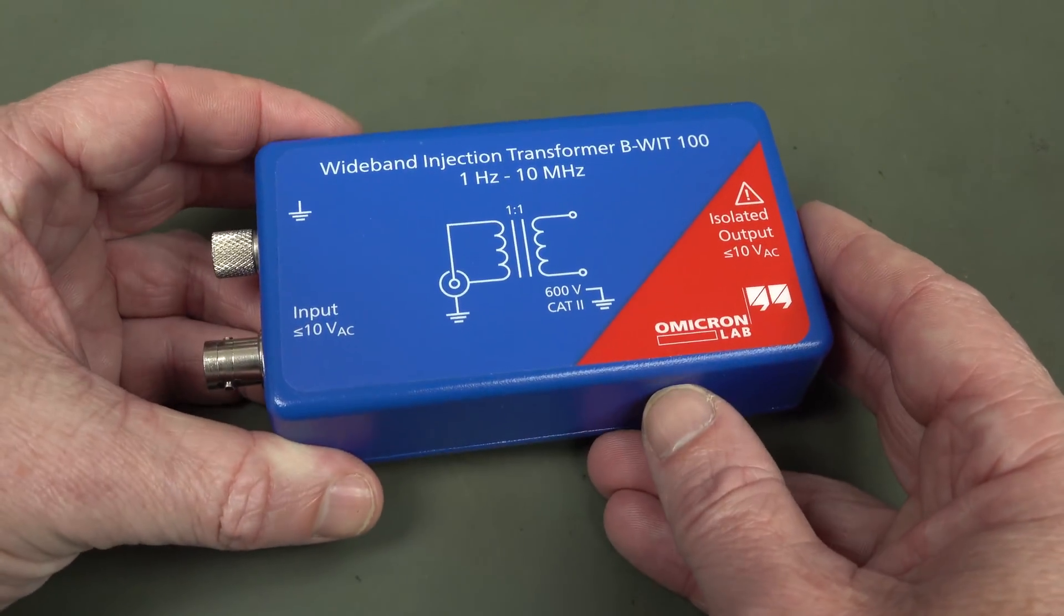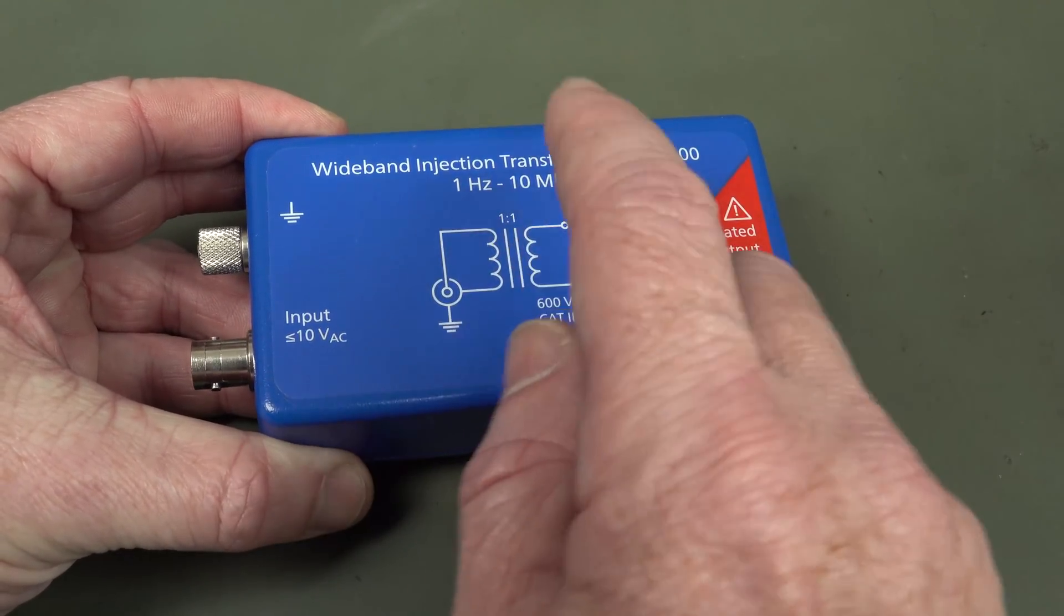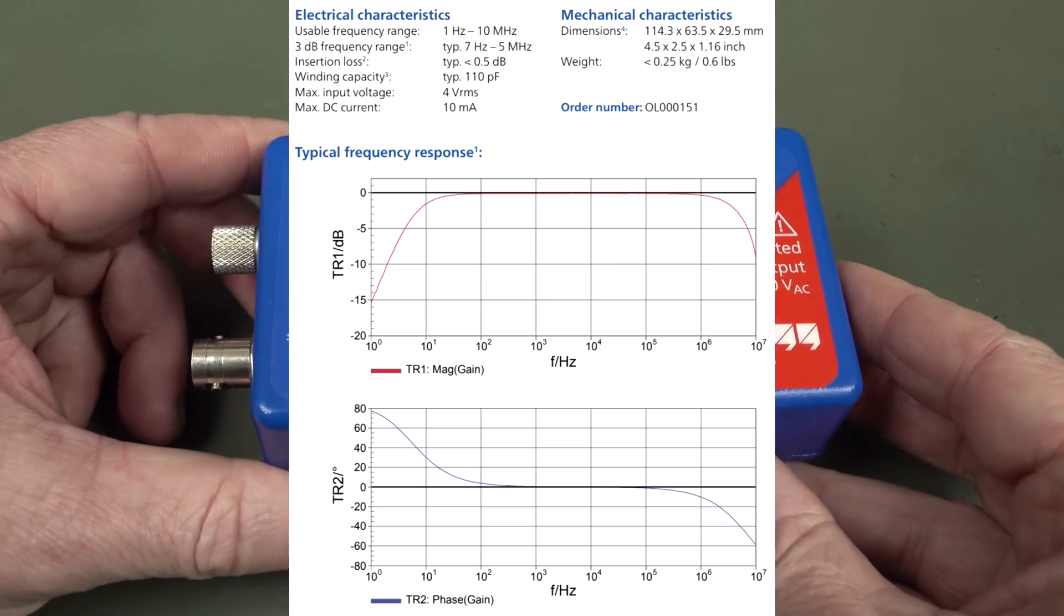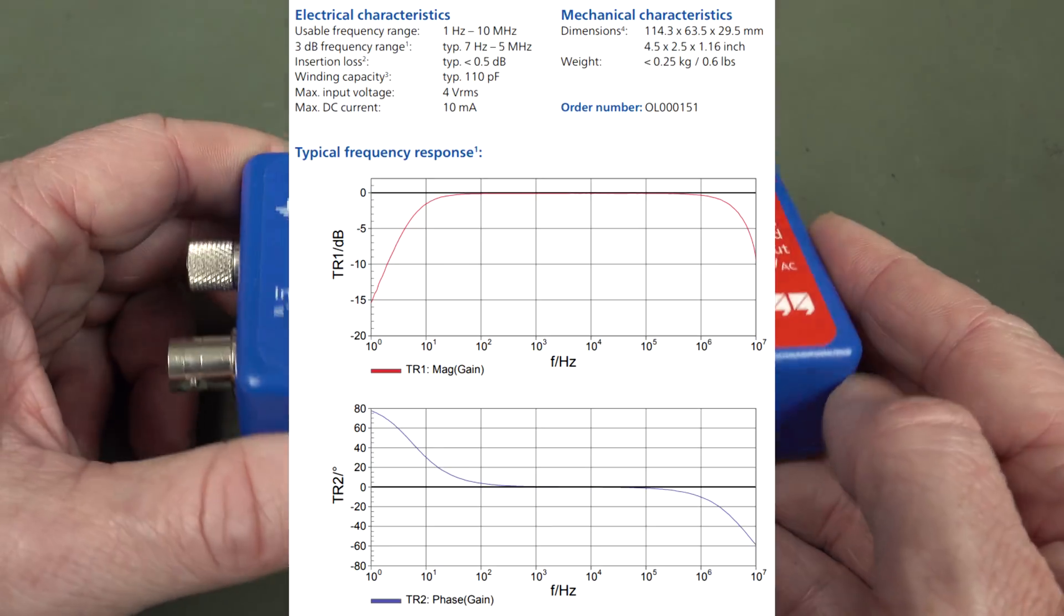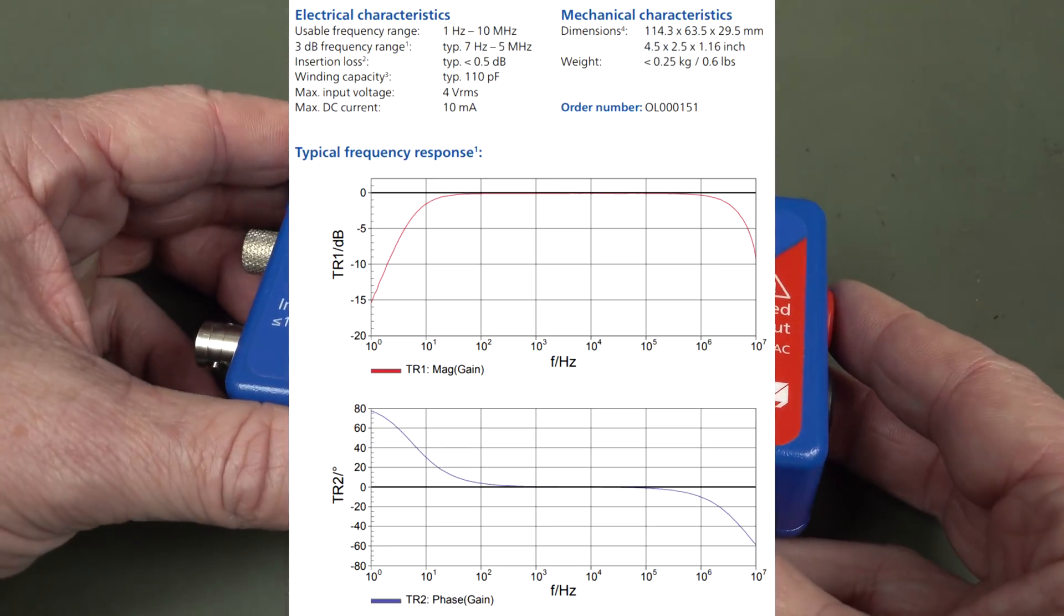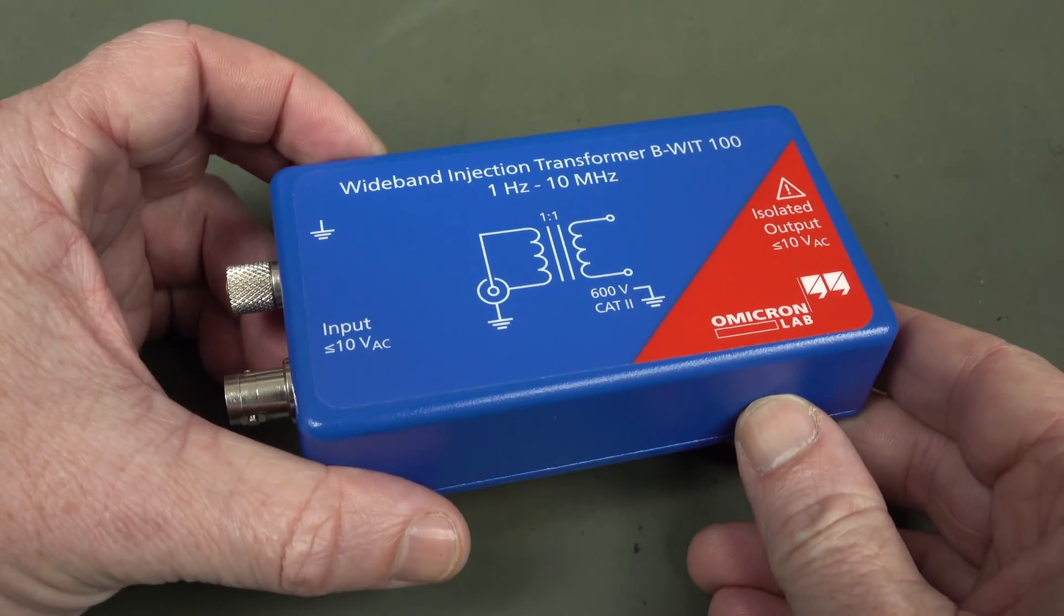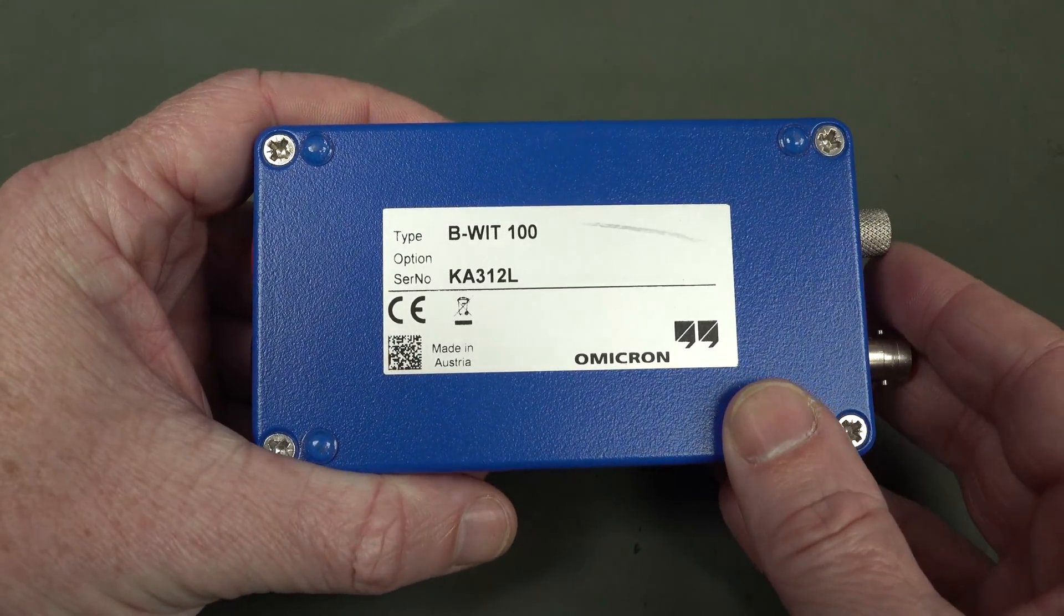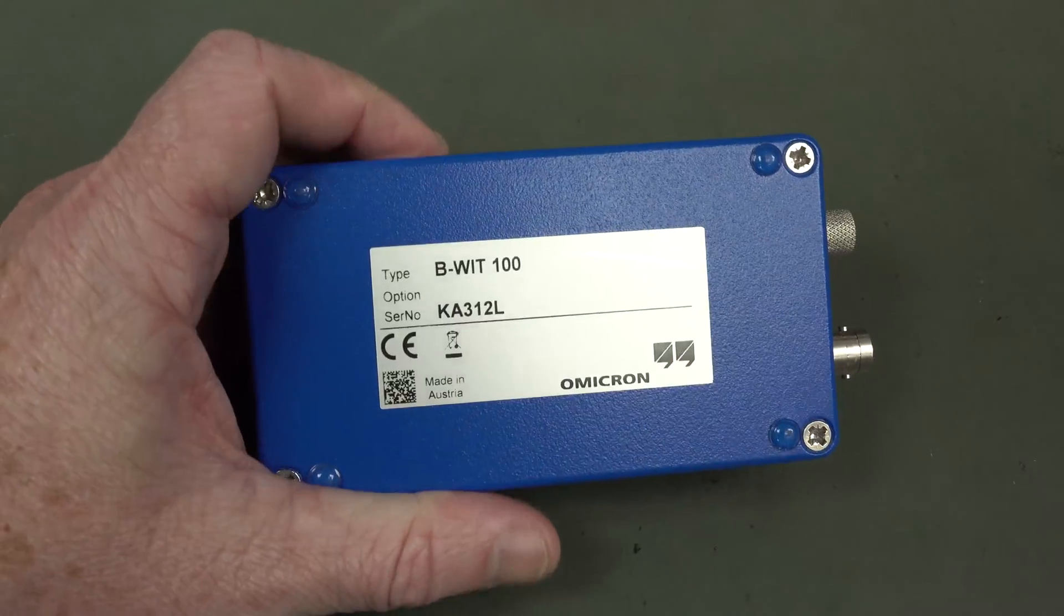Now these things, there's not many of these on the market, these wideband injection transformers, because they need a really wide bandwidth. They go from 1 hertz to 10 megahertz and this thing's almost ruler flat over that 1 hertz to 10 megahertz range. It's absolutely amazing performance. And as far as I'm aware, there's no off-the-shelf transformer that does this, so this is no doubt going to have some custom-made transformer in it, in this case, probably wound by nude virgins in Austria, no doubt. So let's check it out.